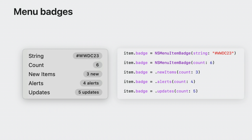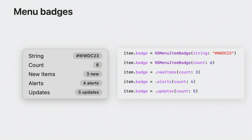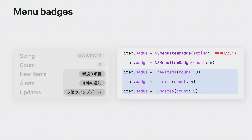Menu items can now be badged in a variety of ways. You can use a simple string or just a count. There are also three specialized count badges: new items, alerts, and updates. When you use one of these badges, AppKit will automatically add and properly localize the appropriate text — for example, in Japanese. Note that you are still responsible for localizing the menu item itself and the generic string badge variant.